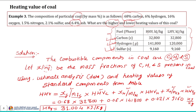This value indicates the higher heating value of the given coal sample, estimated using the composition of the coal and the heating values of the standard components. Similarly, now let us calculate the lower heating value of the coal sample.